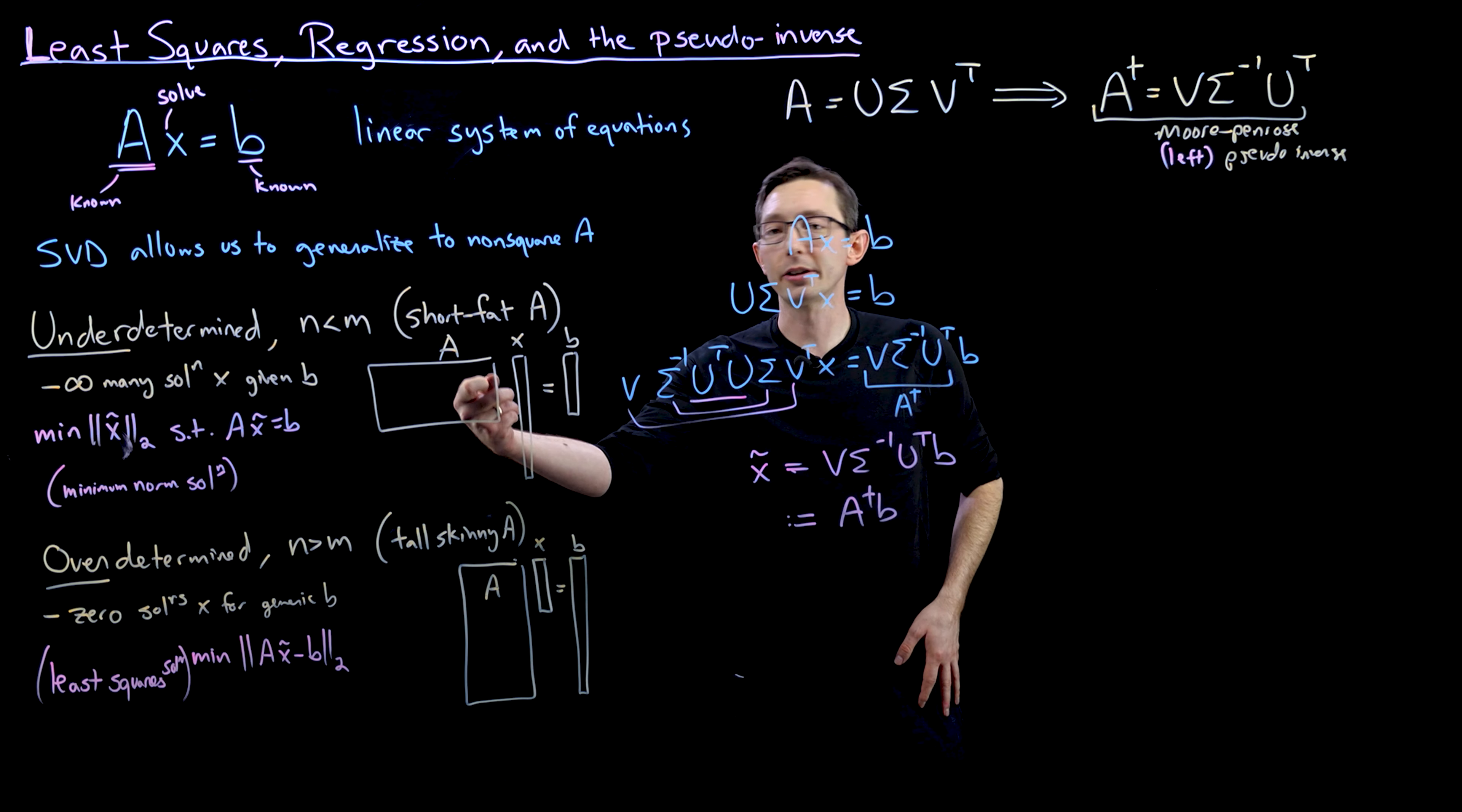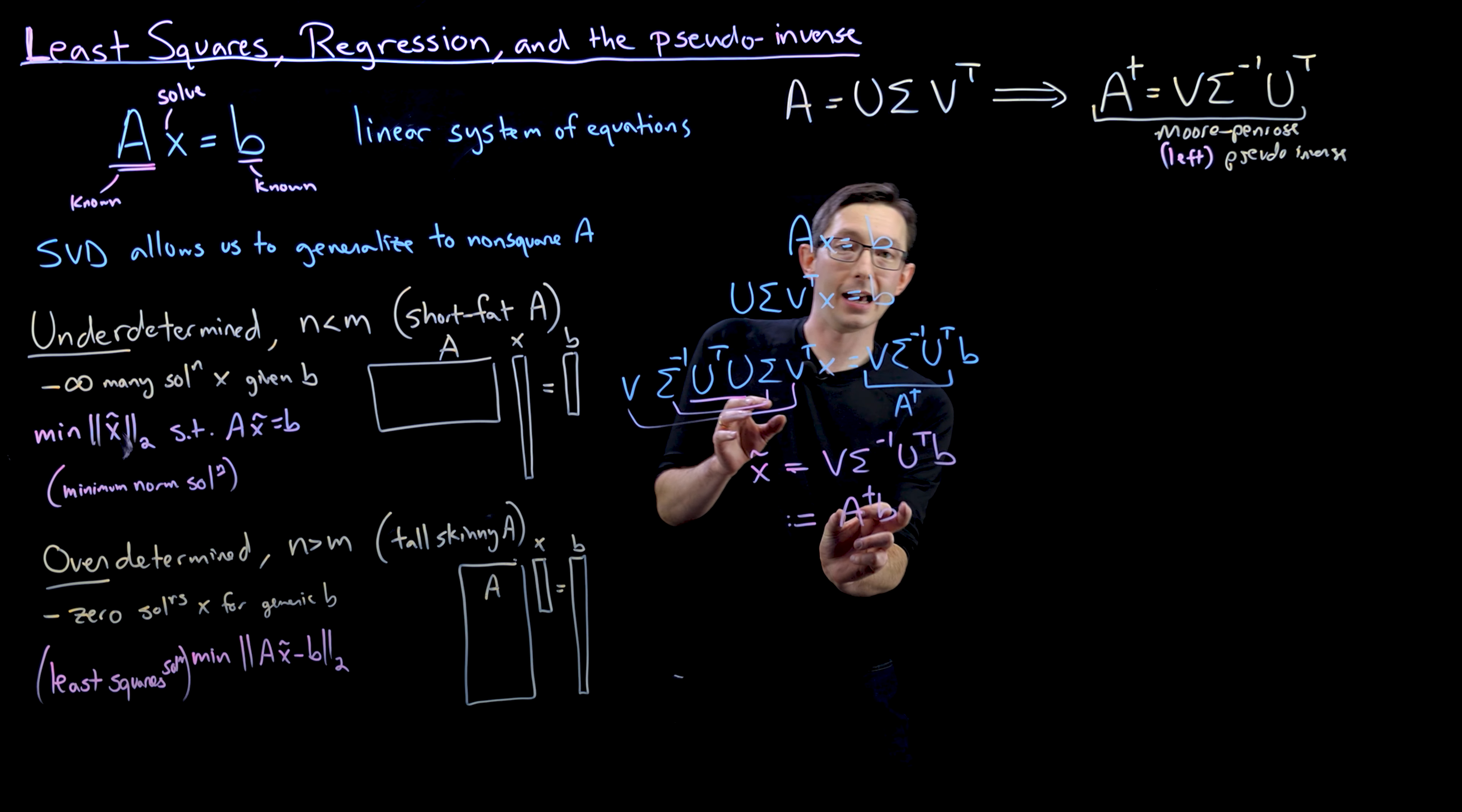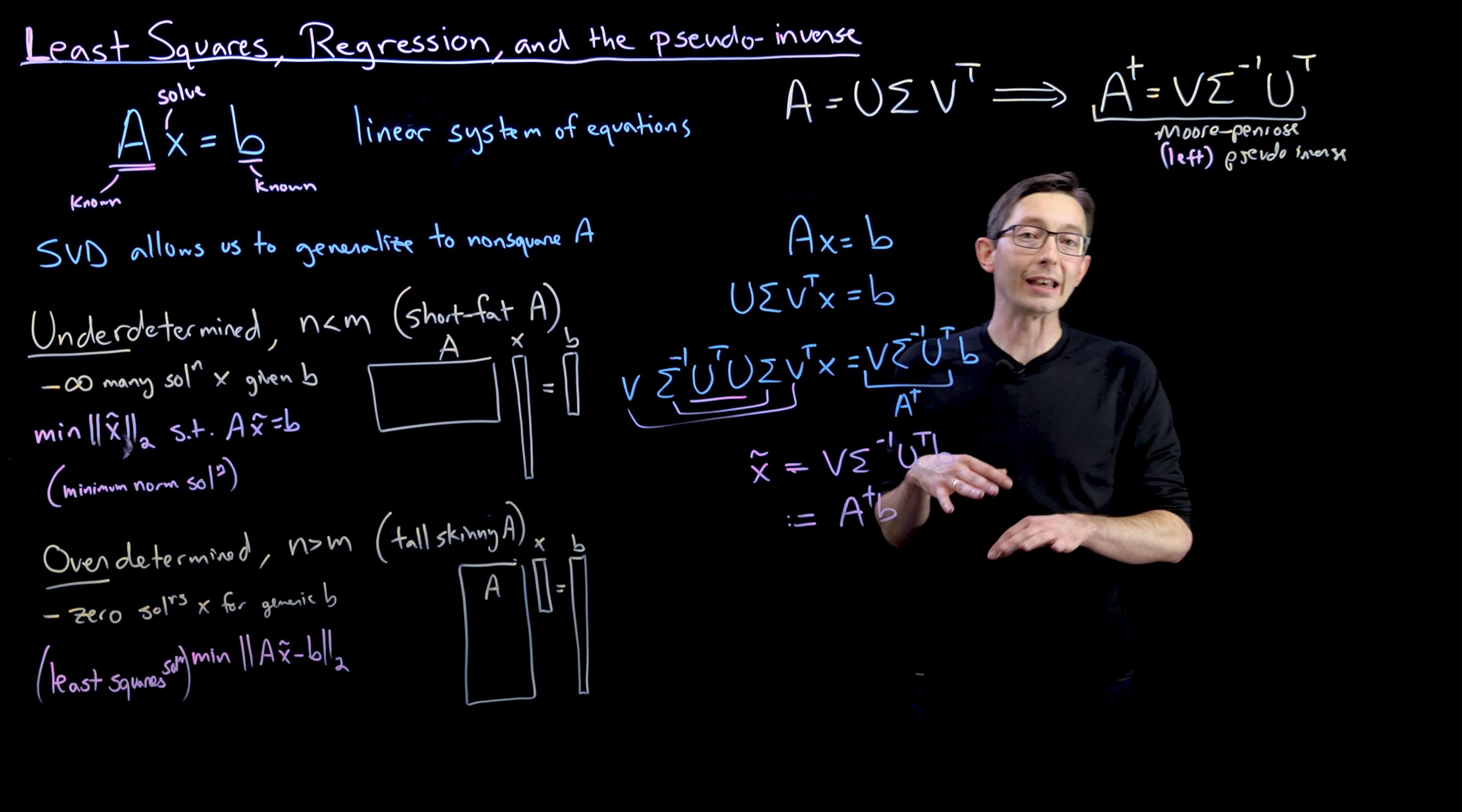Now in the underdetermined case where there are infinitely many solutions, this is actually a solution. If you multiply A by this x tilde, you actually get B, and this is the minimum two norm x that satisfies this equation. But in the overdetermined case, there are no exact solutions, and this will only approximately multiply by A to equal B.